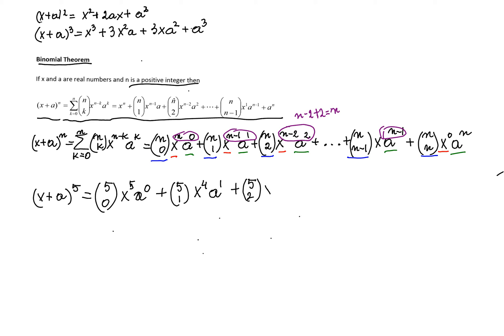The coefficient will be 5 choose 2, x exponent will reduce by 1 and the a exponent will increase by 1 and so on. 5 choose 3 will have x squared, a to the third and then 5 choose 4, x to the first, a to the fourth.